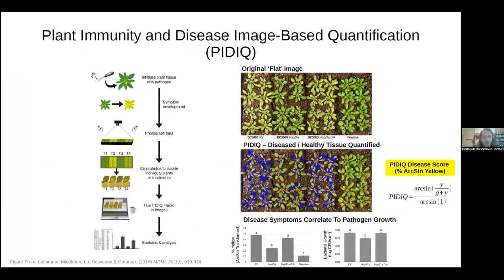Briefly, PIDIC works as follows: spray inoculate your plants grown on flats, wait for symptoms to develop — typically measured as chlorotic tissue, meaning yellowing of tissue is your outcome. You photograph the plants, run the PIDIC image analysis software to identify the percentage of yellow disease tissue, which gives you a corresponding disease score. The higher the disease score, the more yellow tissue and the greater the degree of chlorosis.